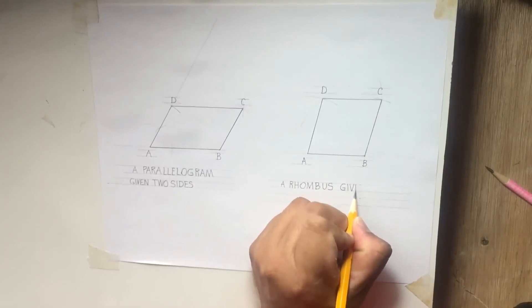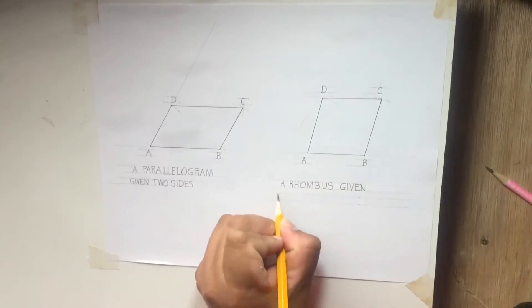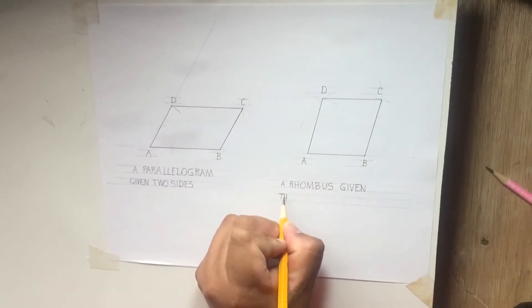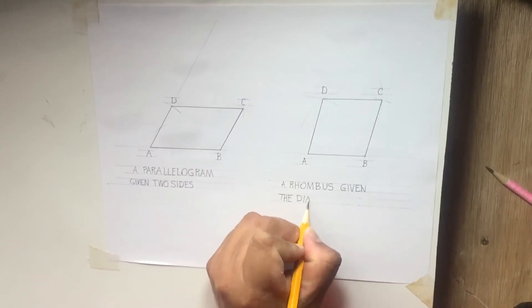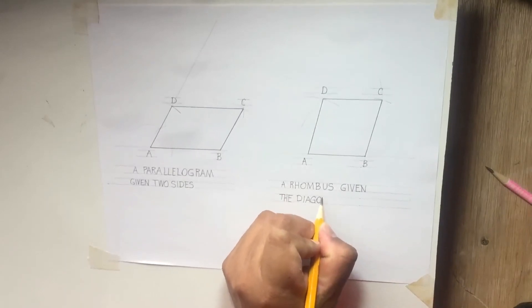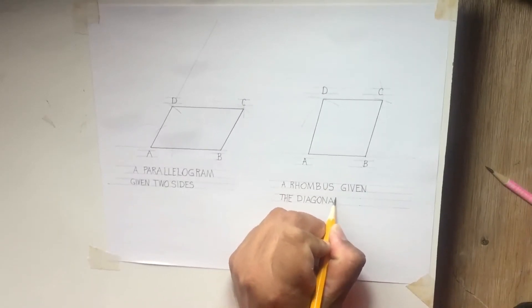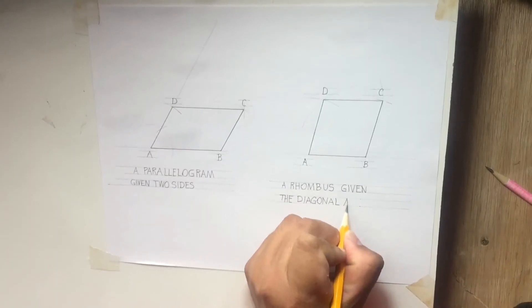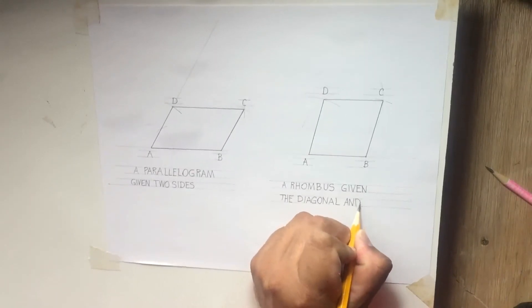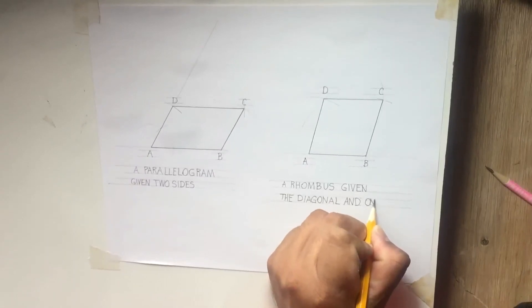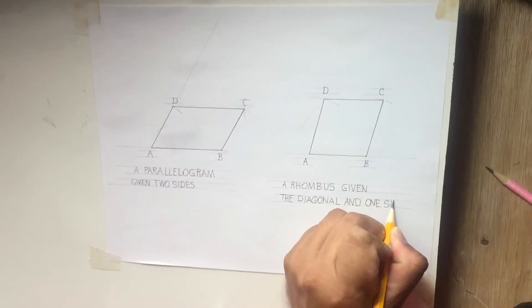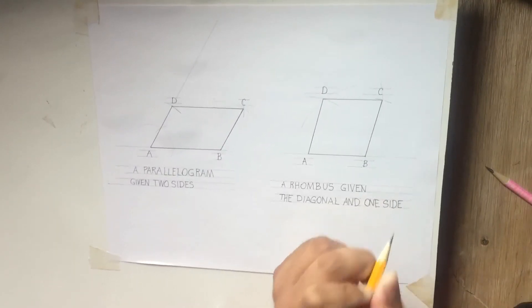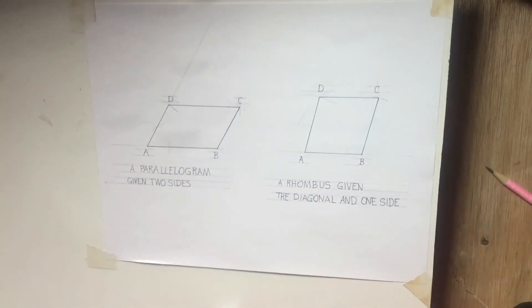Given the diagonal and one side. Okay, that is the construction of our rhombus. Thank you guys for following.